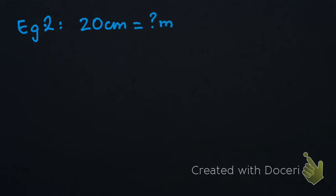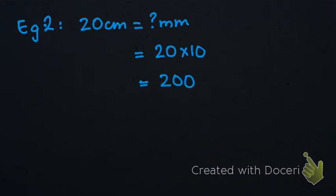Let's do another example. We have 20 centimeters and we need to find its value in millimeters. We simply multiply 20 by 10 and our answer will become 200 millimeters. So when we are converting centimeters into millimeters, we simply multiply by 10.